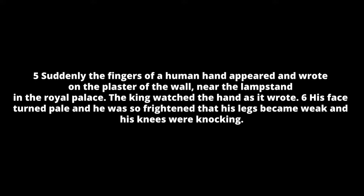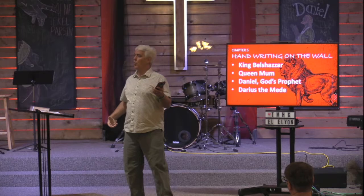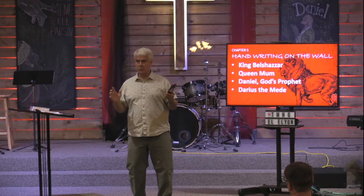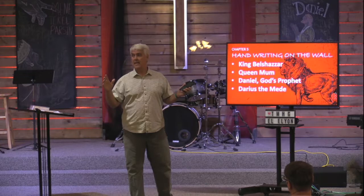Suddenly, verse five: the fingers of a human hand appeared and wrote on the plaster of the wall near the lampstand in the royal palace. The king watched the hand as it wrote. His face turned pale and he was so frightened that his legs became weak and his knees were knocking. There's some discussion about 'legs became weak' — the Hebrew word talks about his bowels; basically he soiled himself. That's how scared he was.